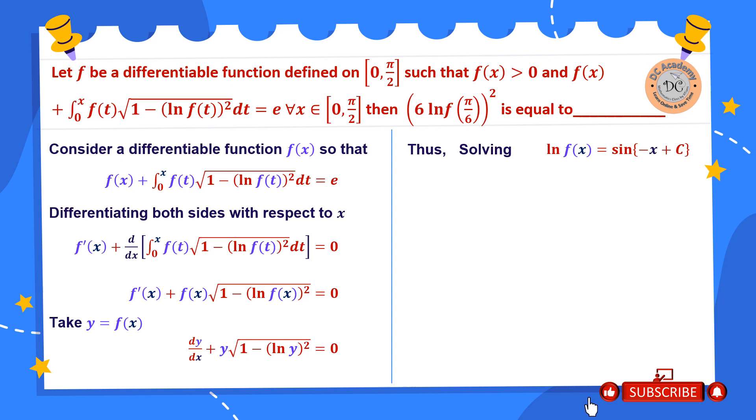Now notice that to find out c we need a condition or value of the function at some particular point. Now notice that in this particular given expression, if I substitute x = 0 then we can easily calculate what is f(0). So that's why I substitute x = 0 and we have f(0) = e, because that limit or the integration from 0 to 0 of f(t) and ln f(t) and all that stuff is obviously equal to 0. So therefore we get f(0) = e.